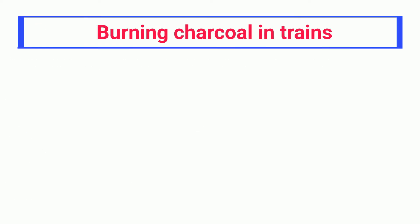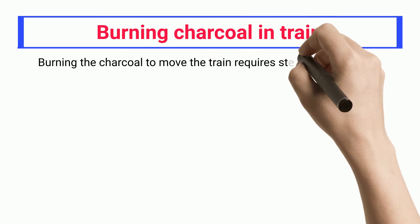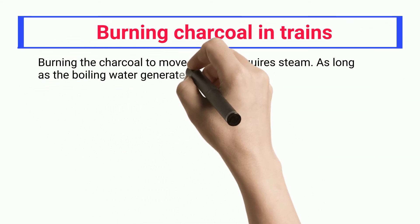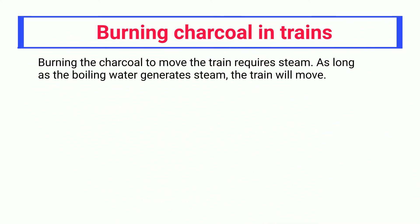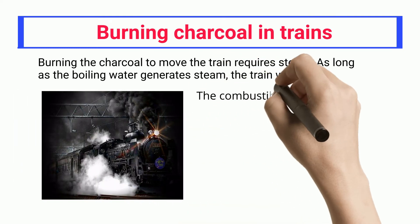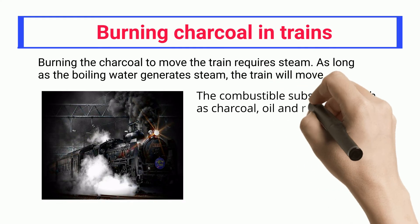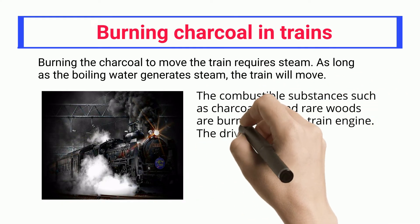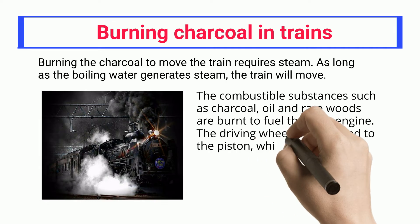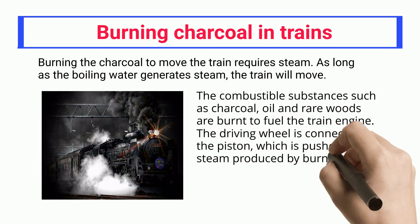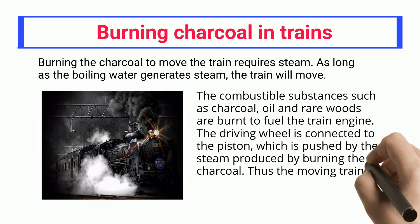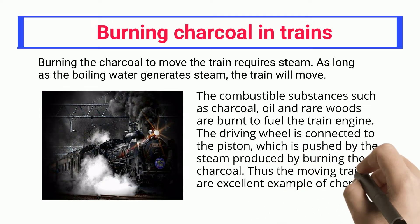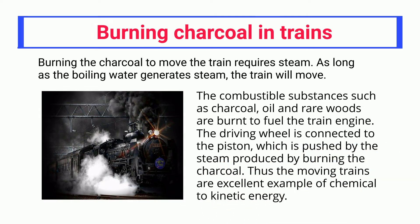Burning Charcoal in Trains. Burning charcoal to move the train requires steam. As long as the boiling water generates steam, the train will move. The combustible substances such as charcoal, oil, and firewood are burnt to fuel the train engine. The driving wheel is connected to the piston, which is pushed by the steam produced by burning the charcoal. Thus moving trains are an excellent example of chemical to kinetic energy conversion.